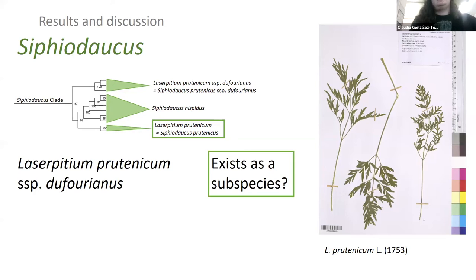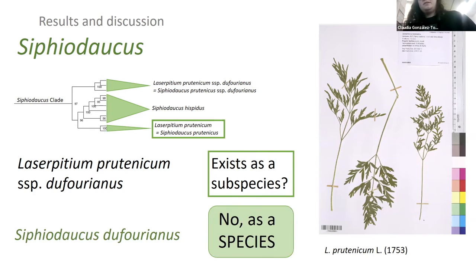Now we found a third clade of what was thought to be a Laserpitium prutenicum subspecies. The problem with this Laserpitium prutenicum subspecies dufourianum is that it was an endemic of the Iberian Peninsula, and there was a really vivid discussion regarding whether the morphological variability displayed was enough to think that this was a different subspecies. So to the question, is this really a subspecies or is it just variability of prutenicum? Our answer is no, this is a species, and we call this Siphidaucus dufourianus.